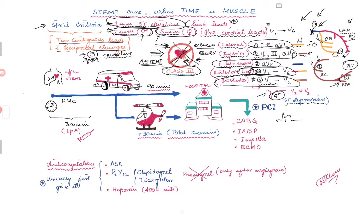Moving to the management pathway: a patient with chest pain calls EMS or presents to the emergency room. The triage nurse suspects ACS or MI and performs an EKG. Once the patient gets an EKG and meets criteria for STEMI, the clock starts ticking. This constitutes the first medical contact — whether EMS performs the EKG in the field or the patient comes to the ER and gets the EKG there.